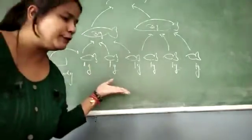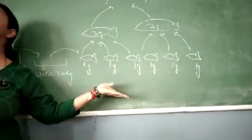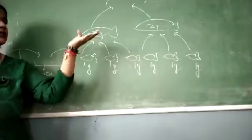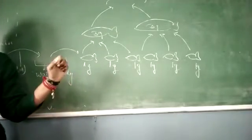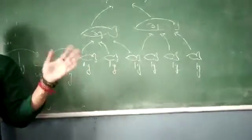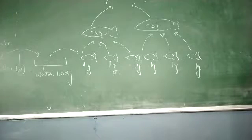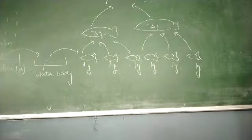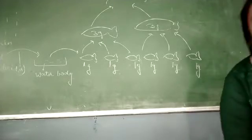When food passes from one trophic level to another trophic level, the amount of chemicals increases. This process is known as bio-magnification. The increase in the amount of non-biodegradable chemicals — chemicals that are not biodegradable — as food passes from one trophic level to another is known as biological magnification.